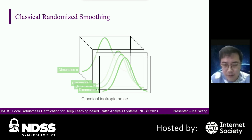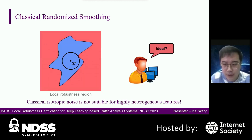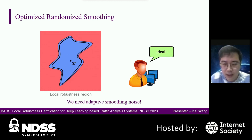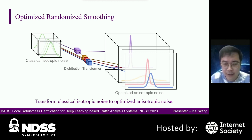In classical randomized smoothing, the classical isotropic noise has the same noise distributions in all dimensions, generating a local robustness region as shown in the figure. However, it is not suitable for highly heterogeneous features. In fact, the local robustness region shown in the left figure is ideal. We need adaptive smoothing noise. Therefore, we propose the distribution transformer, which can transform the classical isotropic noise into an optimized anisotropic noise to adapt to heterogeneous traffic features.